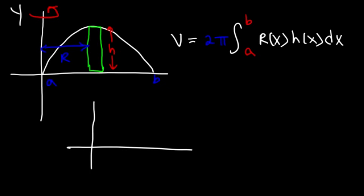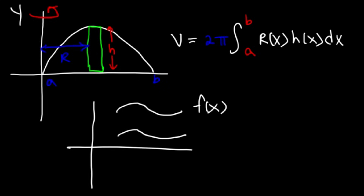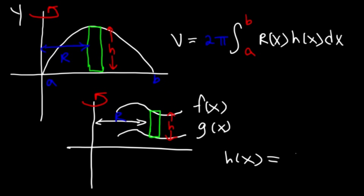Sometimes you may have two curves as opposed to one. Let's call the top curve f(x) and the bottom g(x). We want to rotate about the y-axis, so the rectangle is going to be parallel to the y-axis. The radius is still the distance between the rectangle and the axis of rotation, and this is going to be the height of the shell. The only difference is that the height h(x) equals the top function f(x) minus the bottom function g(x). The limits of integration will still be A to B and represent x values.